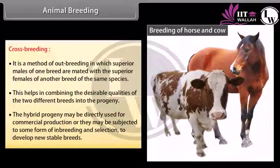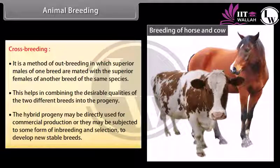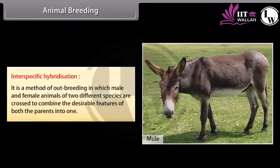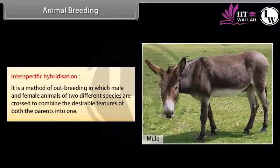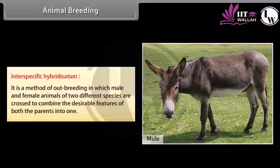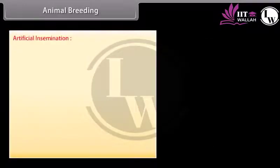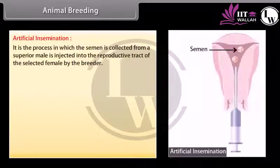One example of crossbreeding is Hisardale, a new breed of sheep developed by crossing Bikaneri ewes and Merino rams. Interspecific hybridization is a method of outbreeding in which male and female animals of two different species are crossed to combine the desirable features of both parents into one. For example, mule is produced by a cross between a male donkey and a female horse.